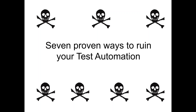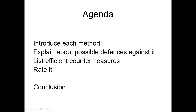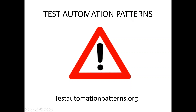Ruining test automation — but if you do it on purpose, it can even be fun. What I want to present is to introduce each method, and of course, people are going to defend against this, so I'll explain what possible defenses they can have so that you can plan your countermeasures. I'll rate every method so you can see which are better for you. But before we start, I want to warn you: there is a wiki called Test Automation Patterns, and you can find it at testautomationpatterns.org. This wiki is a collection of solutions that experienced practitioners have already found for issues in test automation — and it's really dangerous, because if other people find out about this wiki, you will have trouble destroying test automation.